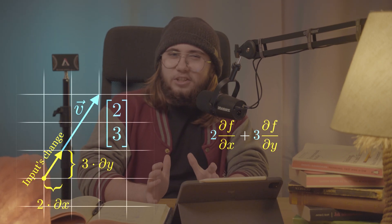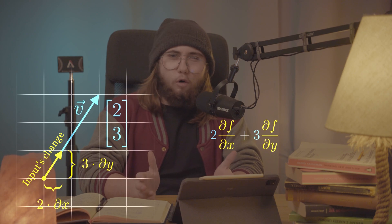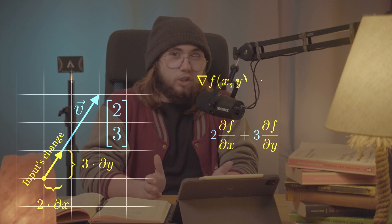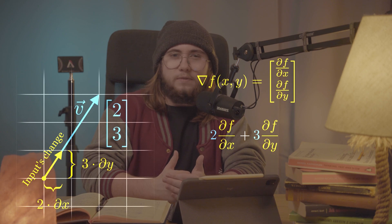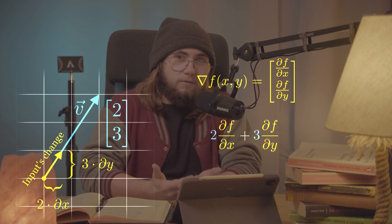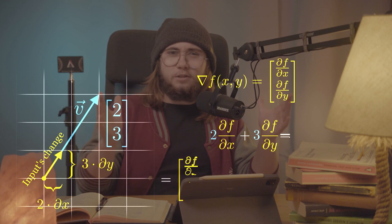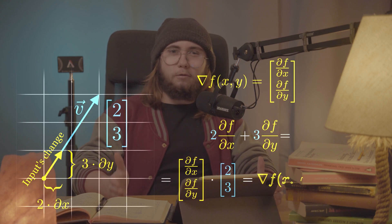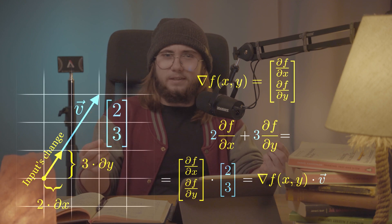We can express that directional derivative as a linear combination of the partial derivatives with respect to x and y — just two times the partial of x plus three times the partial of y. Recalling that the gradient is in general just a vector carrying all of the partial derivatives of our function, what we have here is pretty much just the dot product of the gradient of f and the vector v.